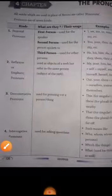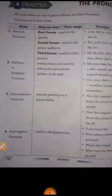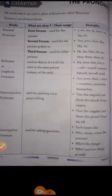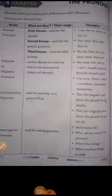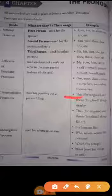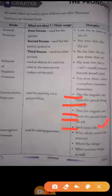Next is demonstrative pronoun. Used for pointing out a person or a thing. Ye kisi particular person or particular thing ko define or describe karne ke liye use kiya jata hai. Jaisa ki this for singular, these for plural, that for singular, those for plural. Such means like. Jaisa ki I like such people. Such ka matlab hata us tarah ke lo.